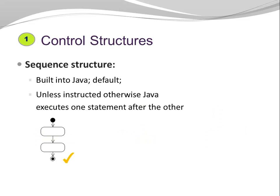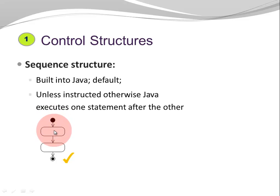Let's look at the number one control structure: the sequence structure. This is built into Java — this is the default. Unless instructed otherwise, Java just executes one statement after the other as specified in the code. Here you can see the corresponding activity diagram. We execute one action after the other, or one instruction after the other, until we reach the end, which is the final state.